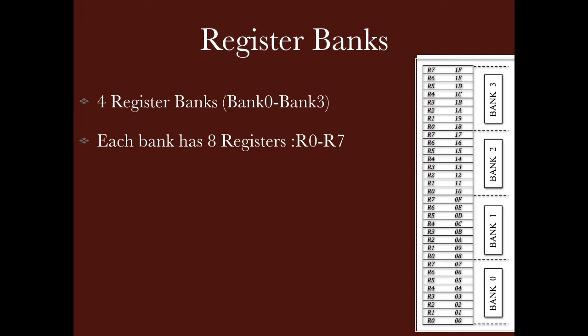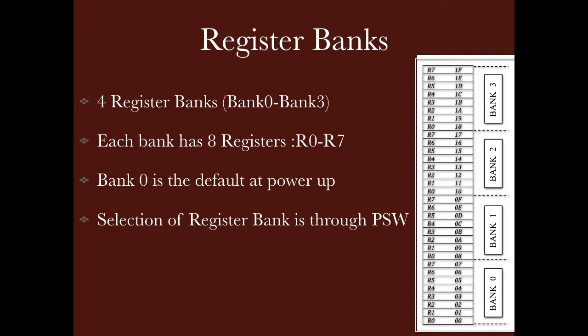R1 is at location 01H, R2 at 02H, and so on up to 07H. The second register bank, Bank 1, runs from 08H to 0FH. The third register bank starts from 10H and goes to 17H. The last bank runs from 18H to 1FH. Bank 0 is the default register bank — when you switch on the power or reset, Bank 0 is selected. To select another register bank, we use the PSW, or Program Status Word register, bits D4 and D3.